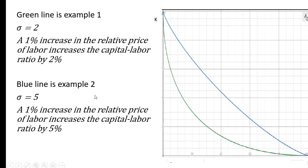Whereas the blue line is example two, the elasticity of substitution here is five. It's much easier for the firm to substitute when the relative price of labor changes. So here a 1% increase in the relative price of labor increases the capital labor ratio by 5%. So it's easier to substitute along this blue line in example two when we have a higher elasticity of substitution.